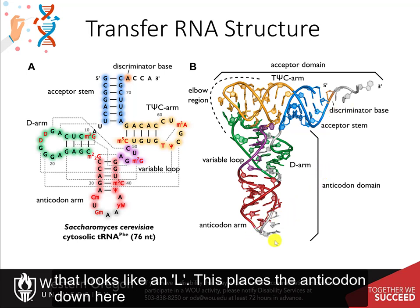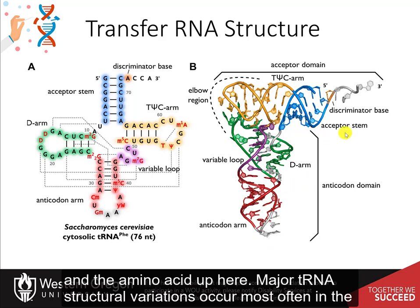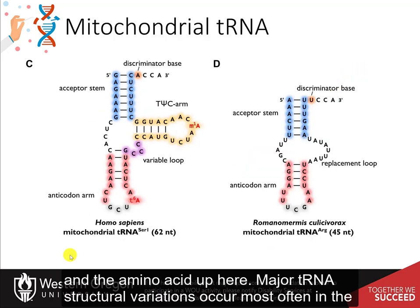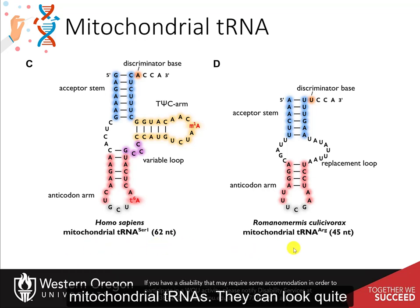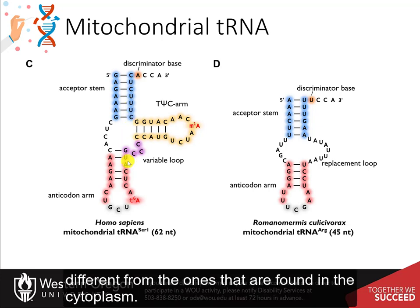This places the anticodon at one end of the L structure. Major transfer RNA structural variations occur most often in the mitochondrial transfer RNAs, which can look quite different from the ones found in the cytoplasm.